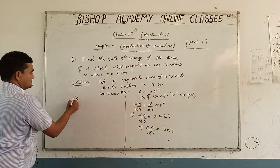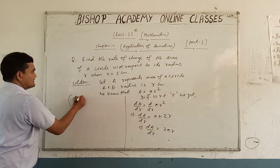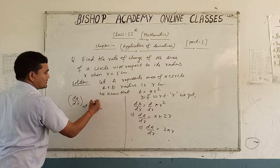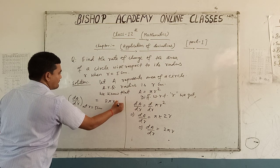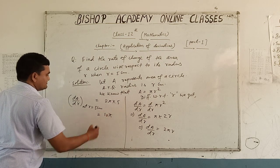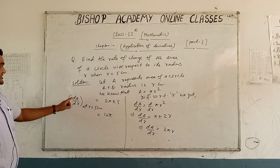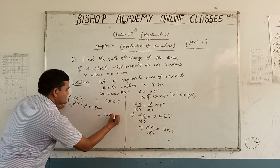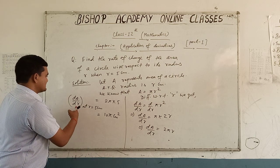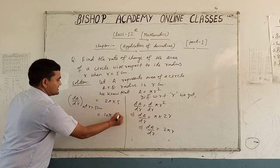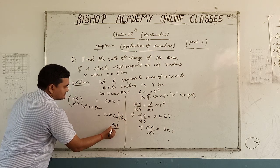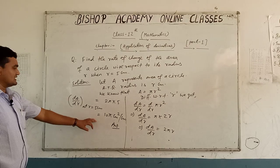Now, dA upon dr at r equal to 5 cm is equal to 2 pi into 5, which is equal to 10 pi. The unit of area is cm squared and radius is in cm, so the answer is 10 pi cm squared per cm. This is the final answer.